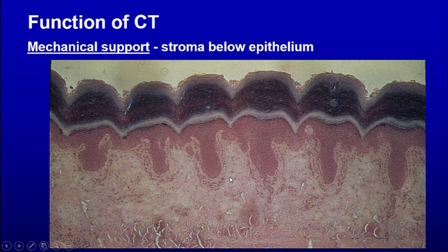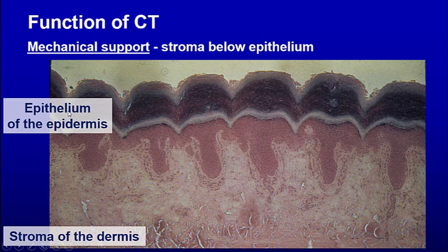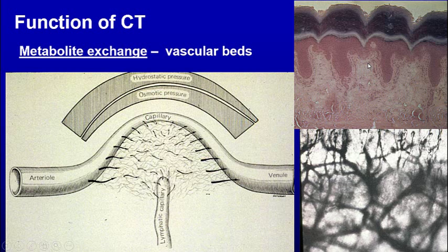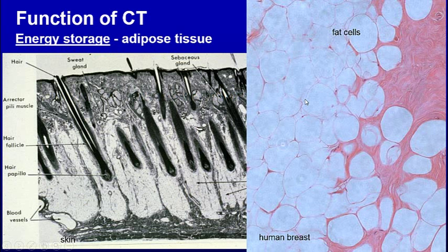Connective tissue provides mechanical support: the dermis interacts with the epidermis via dermal papillae and rete pegs, providing mechanical support for the epithelium. For metabolic exchange, vascular beds come through there with capillaries. As you go along there, you have high osmotic pressure, hydrostatic pressure, and low osmotic pressure, and that exchange occurs as fluid comes out. Proteins reside in the tissue and pull fluid back in. This vascular bed below the epithelium is what connective tissue provides — blood vessels feed the epithelium on the surface.